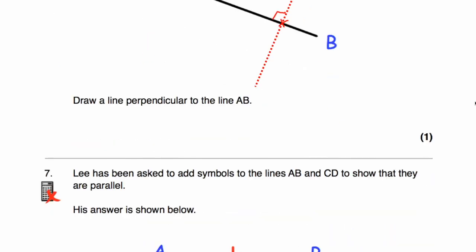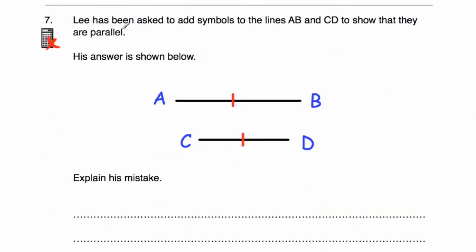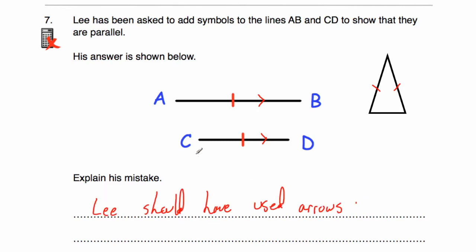Question number seven: Lee has been asked to add symbols to lines AB and CD to show that they are parallel. He's put little dashes in. Those little dashes — used on isosceles triangles — show that lines are the same length, not that they're parallel. Lee should have used arrows. Arrows show that the lines AB and CD are parallel.